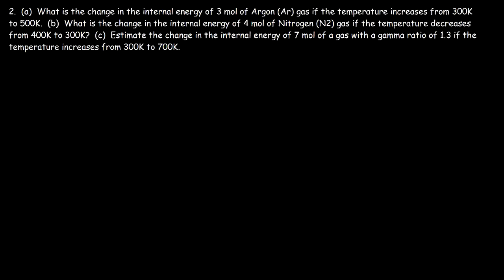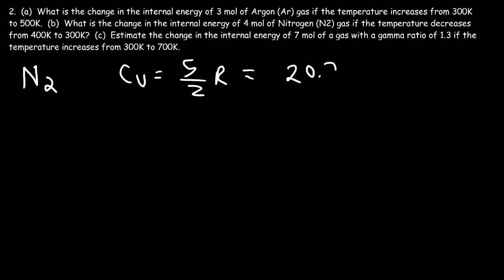Now let's move on to part B: what is the change in internal energy of 4 moles of nitrogen gas if the temperature decreases from 400 Kelvin to 300 Kelvin? Nitrogen gas is a diatomic gas — there are 2 atoms per molecule — so Cv is 5/2 times R, which is 5 times 8.3145 divided by 2, giving approximately 20.79 joules per mole per Kelvin.